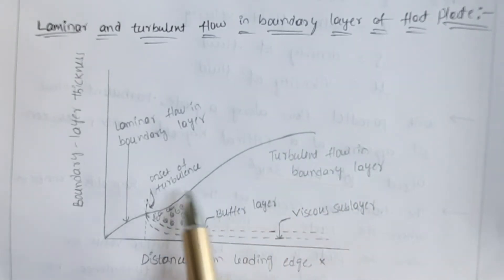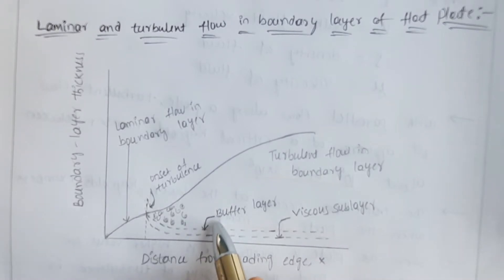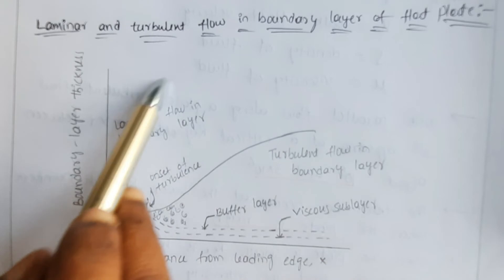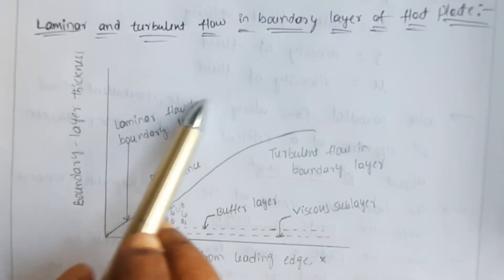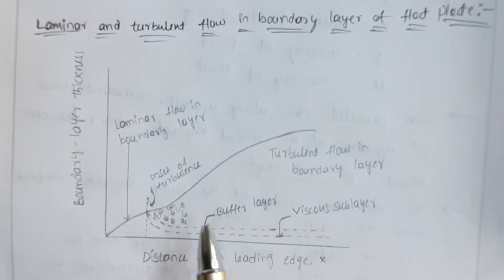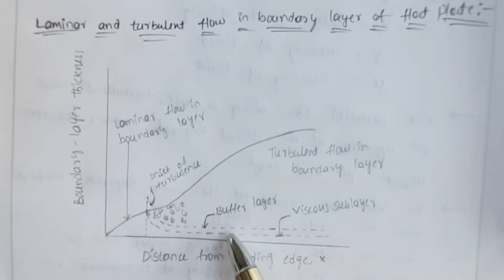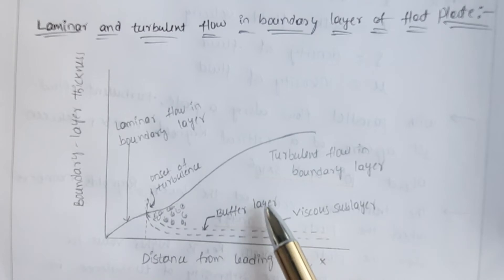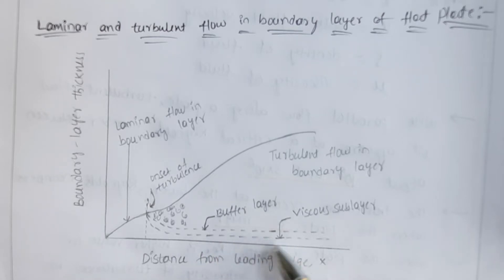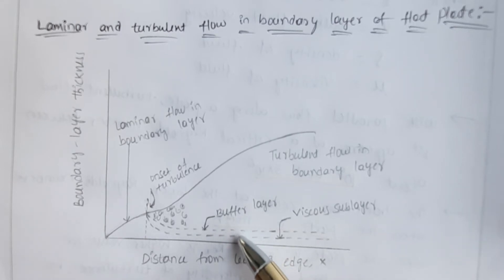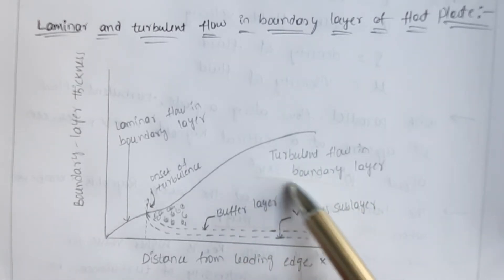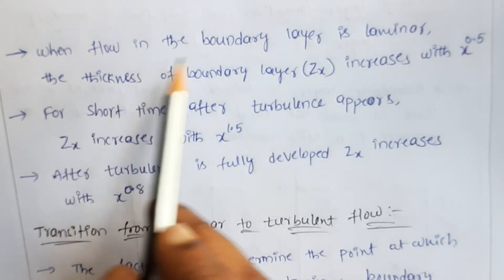Beyond the transition zone, the flow is completely turbulent. Even though velocities away from the solid surface are slightly higher, they do not exceed the free stream. The completely turbulent boundary layer region is categorized into three zones: first, the very near layer to the solid surface is the viscous sublayer; second, the buffer layer (also called the transition layer from laminar to turbulent); and third, the fully developed turbulent region.